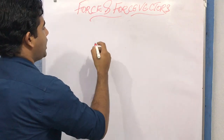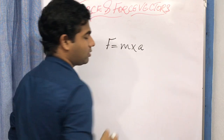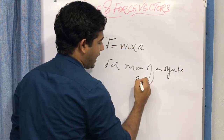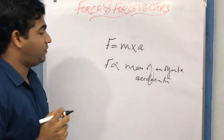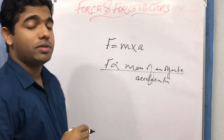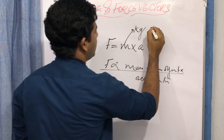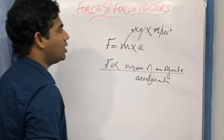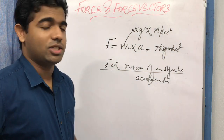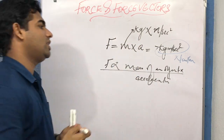We have an equation in physics for force which you might be familiar with: Force = mass × acceleration. Force is directly proportional to the mass of an object as well as its acceleration. Mass is expressed in kilograms and acceleration in meters per second squared, so we get the unit of force as kilogram·meter per second squared, which is known as the Newton.